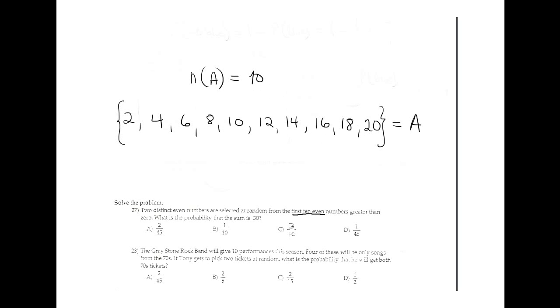The summation is 30. One combination is 10 and 20, 10 plus 20 is 30. Another combination is 12 and 18, and 14 and 16. There are no more combinations. My specific event has cardinality 3. The probability is 3 over 10, option C.